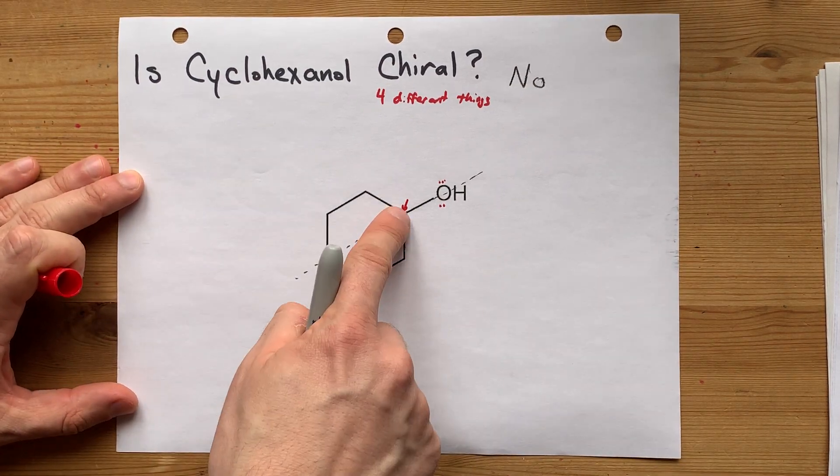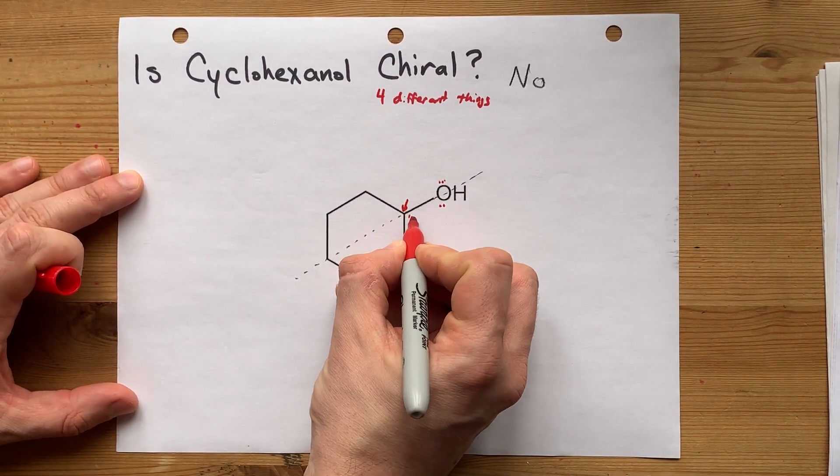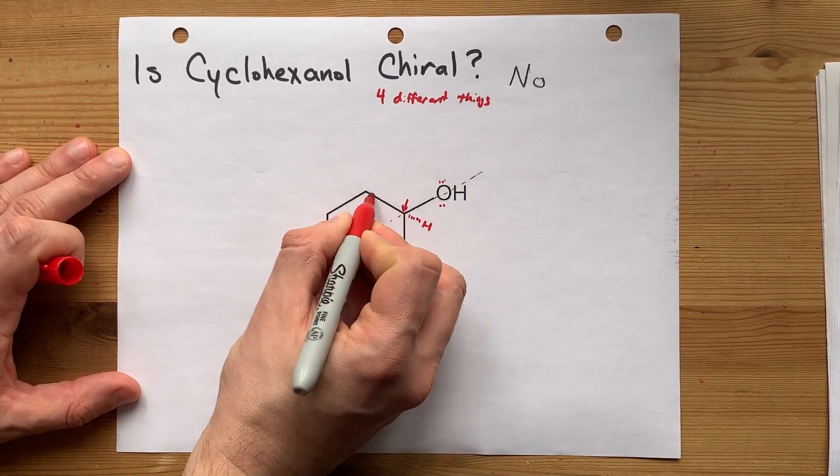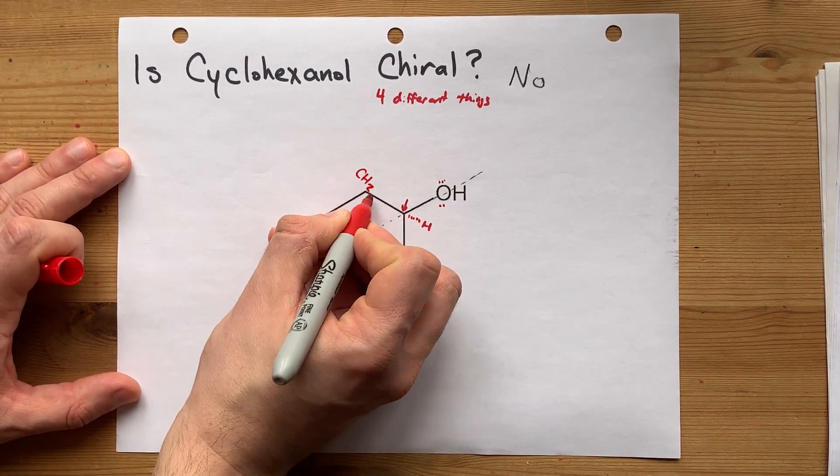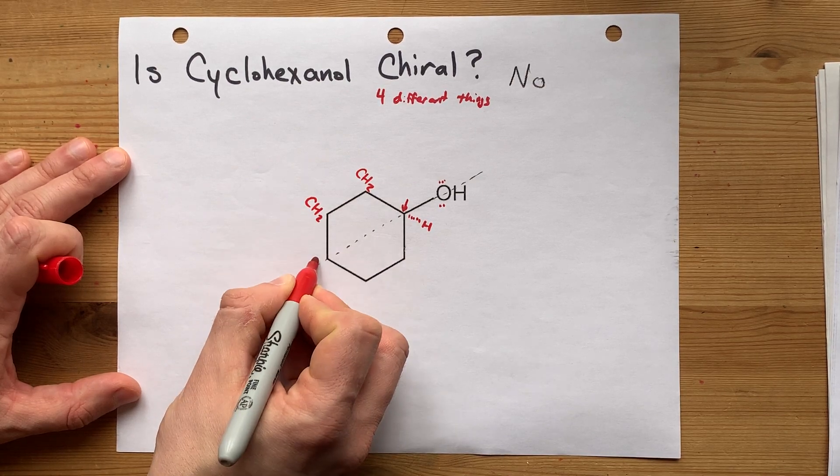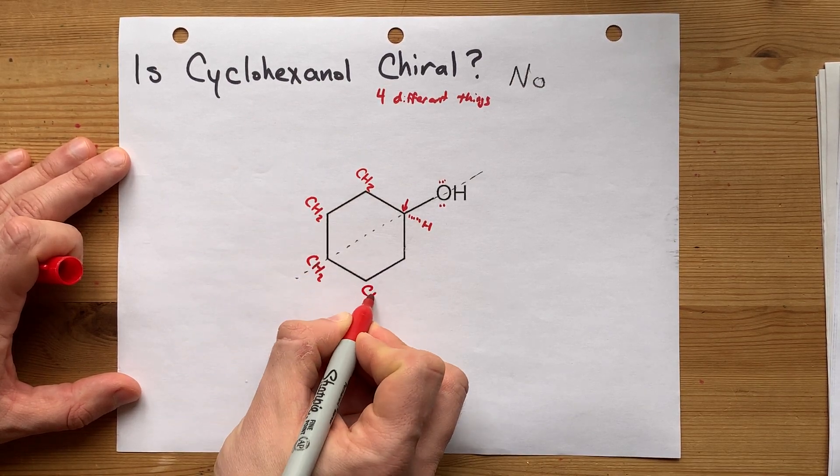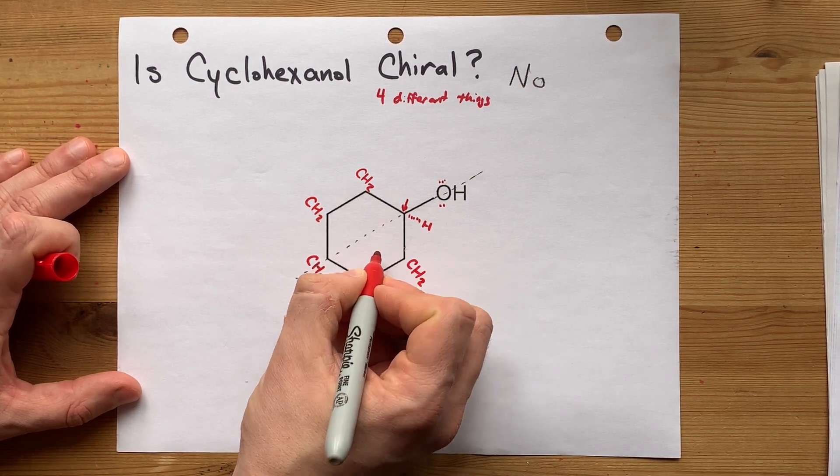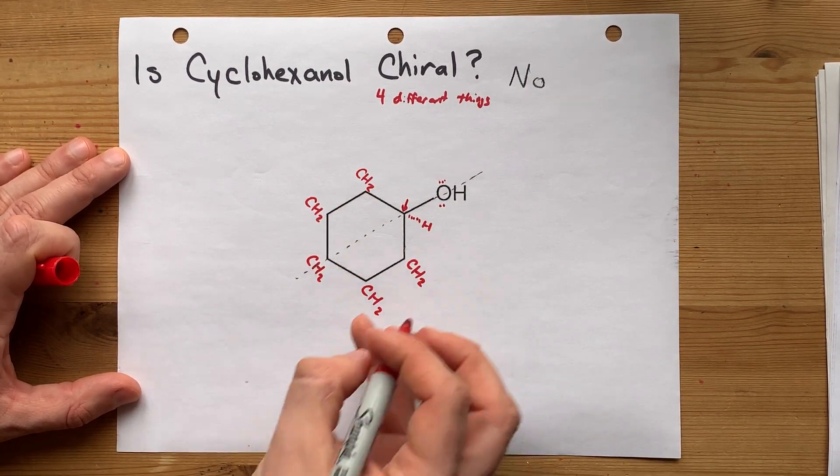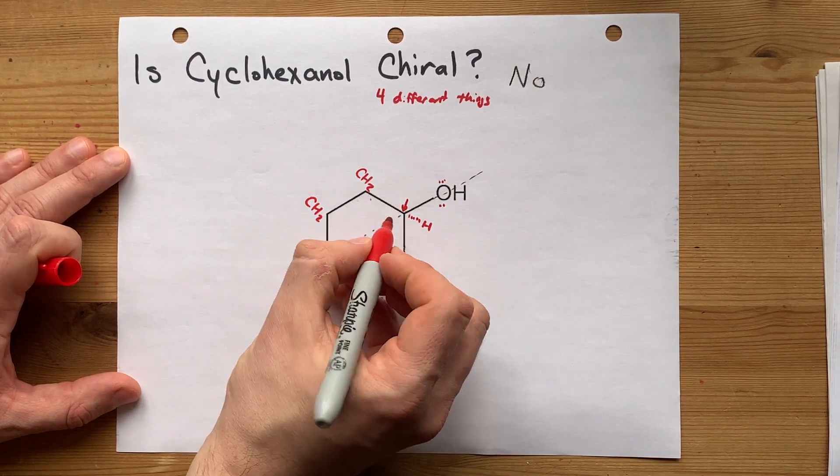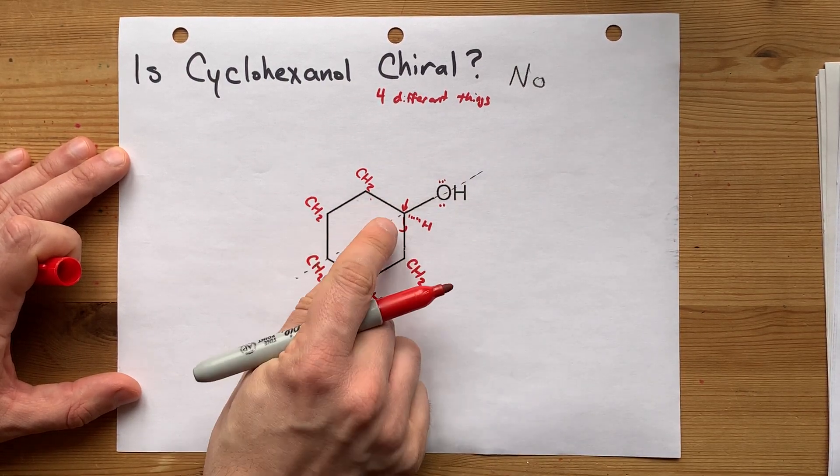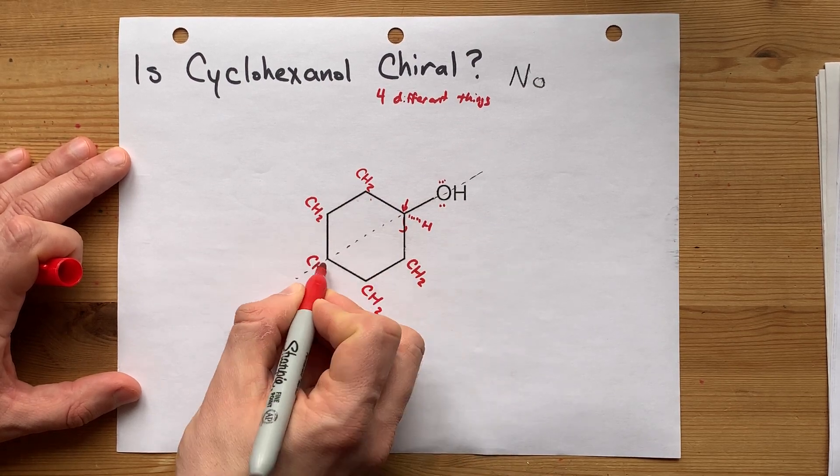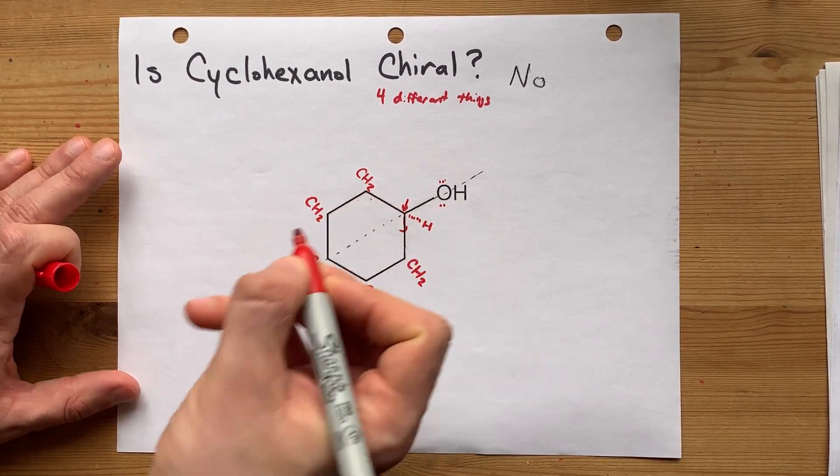Let's see what is attached to it. We've got an OH here, we've got an H that's not shown, and then in one direction we've got CH2, CH2, CH2, CH2, and then it loops back onto itself. In the other direction, the other thing that's connected to that carbon is CH2, CH2, CH2, CH2, CH2, and then loops back on itself.